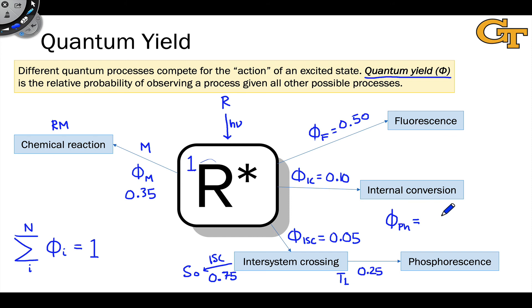That is the composite probability of two things happening. First of all, R star undergoes inter-system crossing to the T1 state, which is the first step essentially of the phosphorescence mechanism. We know the probability of that taking place, that's 0.05. And the probability of that undergoing phosphorescence is associated with this 0.25 value, which we could call a quantum yield, but is actually often called an efficiency.